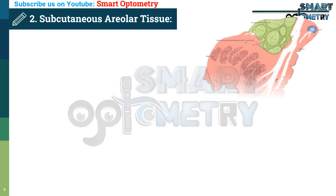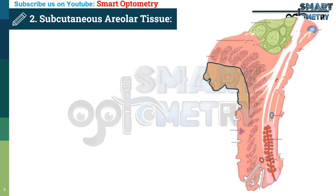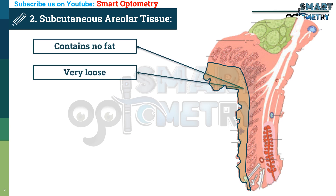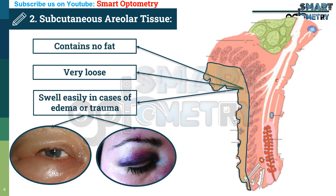Layer 2 – Subcutaneous Areolar Tissue. Just beneath the skin, we find the subcutaneous areolar tissue. This layer contains no fat and is very loose, which allows it to swell easily in cases of edema or trauma, such as a black eye.